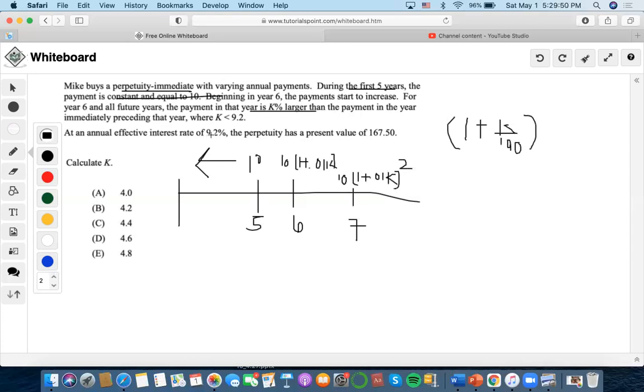At an annual effective interest rate of 9.2 percent, the perpetuity has a present value of 167.50. So we're going to have to set up an equation of perpetuity.